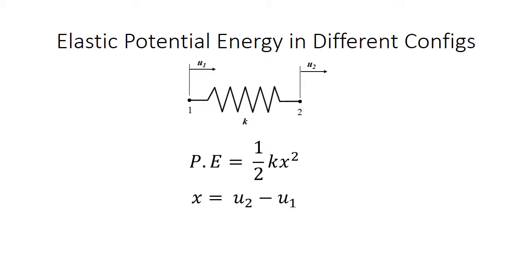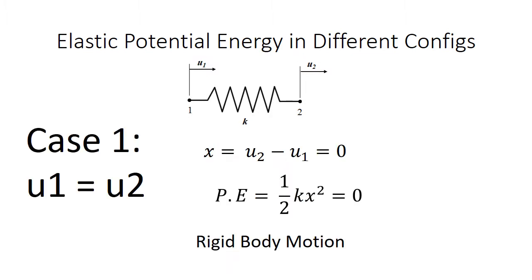Now, we will see how the extension of the spring changes in different configuration. Here you can see the spring with displacement of end 1 represented as U1 and displacement of end 2 represented as U2 and stiffness K. Case 1, if U1 and U2 are equal, there is no extension or compression of the spring and the spring will have rigid body displacement by an amount of U1 or U2.